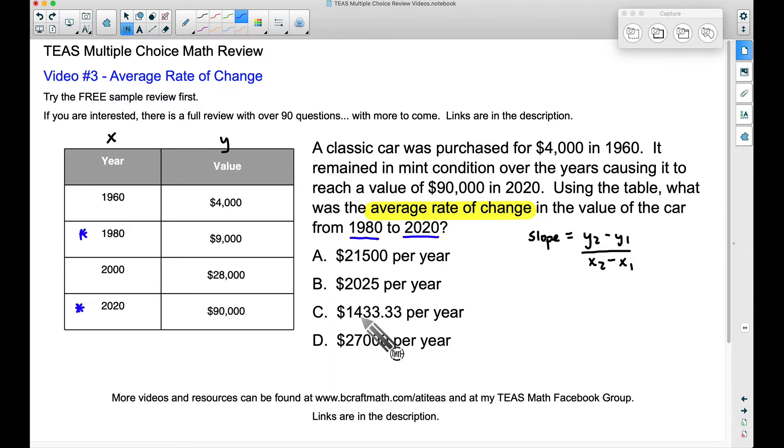Notice the first thing we have in our answer is dollars. How much did the price change from 1980 to the year 2020? Well, it changed from $9,000 to $90,000. Let's think about that. So how much did it change? Let's take 90,000 and let's subtract 9,000. Therefore, that price change is $81,000. This represents how much the car appreciated in value from the year 1980 to the year 2020.